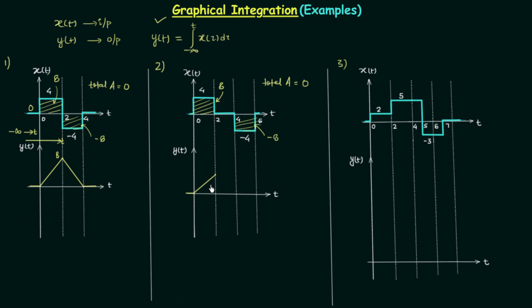When t equals four, since the signal value is zero from two to four, the area remains the same at eight, giving a constant value on the waveform from two to four. After t equals four the area reduces linearly, reaching zero at t equals six and continuing with zero thereafter. This is the complete waveform of the second signal.